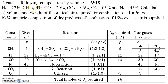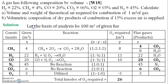Here the gaseous fuel is given — as you can see it is methane, carbon monoxide, CO2, and oxygen. So it is a gaseous fuel. You are asked to calculate the volume and weight of theoretical air required for combustion of 1 meter cube of gas, and also the volume composition of the dry product of combustion if 15% excess air is supplied.